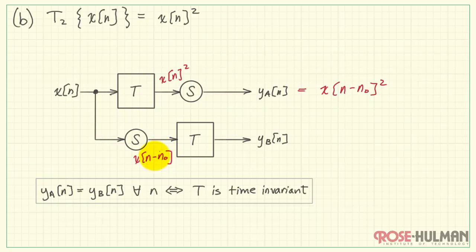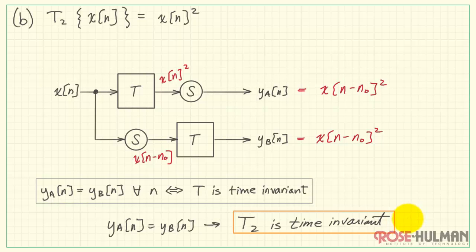X of n first passes through the shift operation, and then it passes through the system. And we don't have to do any work at all to see that these are, in fact, the same. And this system T2 is time invariant.